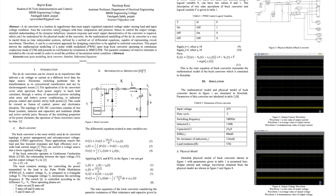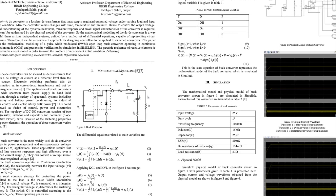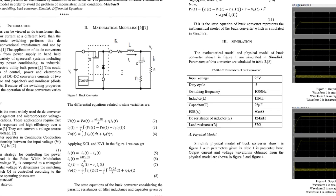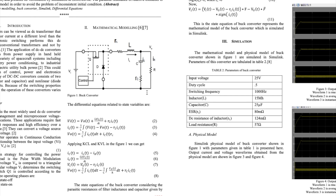We refer to the paper 'Mathematical Modeling of Buck Converter' written by Ranjveer Kaur and Navdeep Kaur. The main equations use V_input equal to V_output plus the resistance drop across the inductor and the resistor. They've taken the line resistance for the inductor as well as the capacitor, but we will not be considering that for our simulation — we'll just be considering the inductance and capacitance.